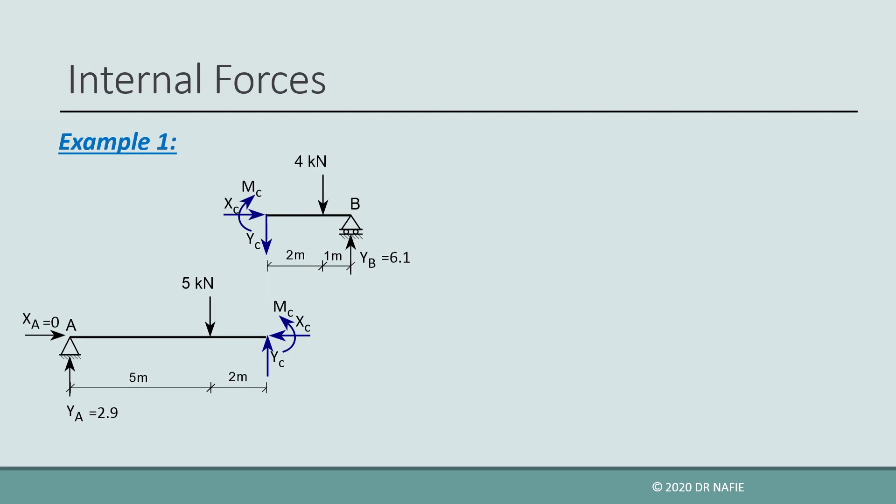In order to see the internal forces at point C, we must cut the beam at C into two parts: part AC and part CB. At each part, two internal forces XC and YC and one internal moment MC appear. Because each of the parts should be in equilibrium, we can apply the equilibrium equations to each part separately. We can evaluate the internal forces using the equilibrium equations on only one part, since the internal forces at one part are equal in magnitude and opposite in direction to those in the other part.